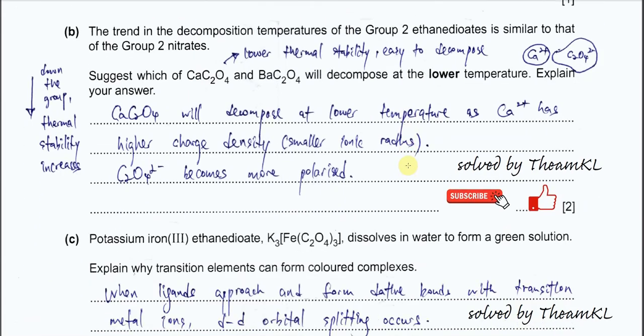Part B: The trend in the decomposition temperatures of Group 2 ethanedioates is similar to those of Group 2 nitrates. Suggest which of calcium ethanedioate or barium ethanedioate will decompose at lower temperature. For the trend of Group 2 nitrates, thermal stability increases down the group, meaning compounds are harder to decompose. So calcium ethanedioate is the one that decomposes easier due to lower thermal stability.